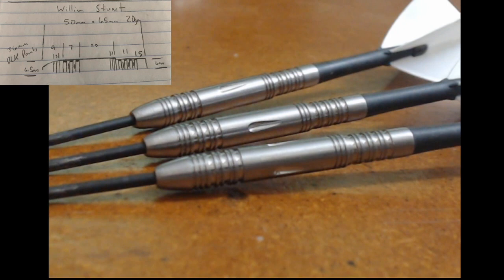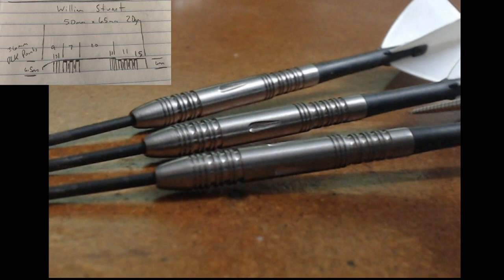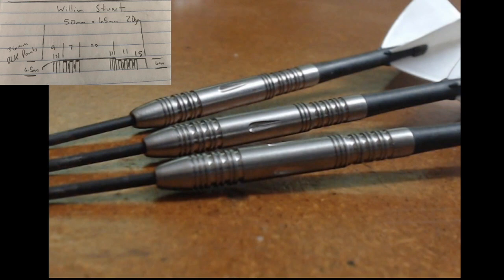In the top left I left the original design there just so you can kind of compare. But we have a 90 percent tungsten dart, 50.03 millimeters long. This very first ring is 6.54 millimeters in diameter and the back is going to be 6.02 millimeters in diameter.